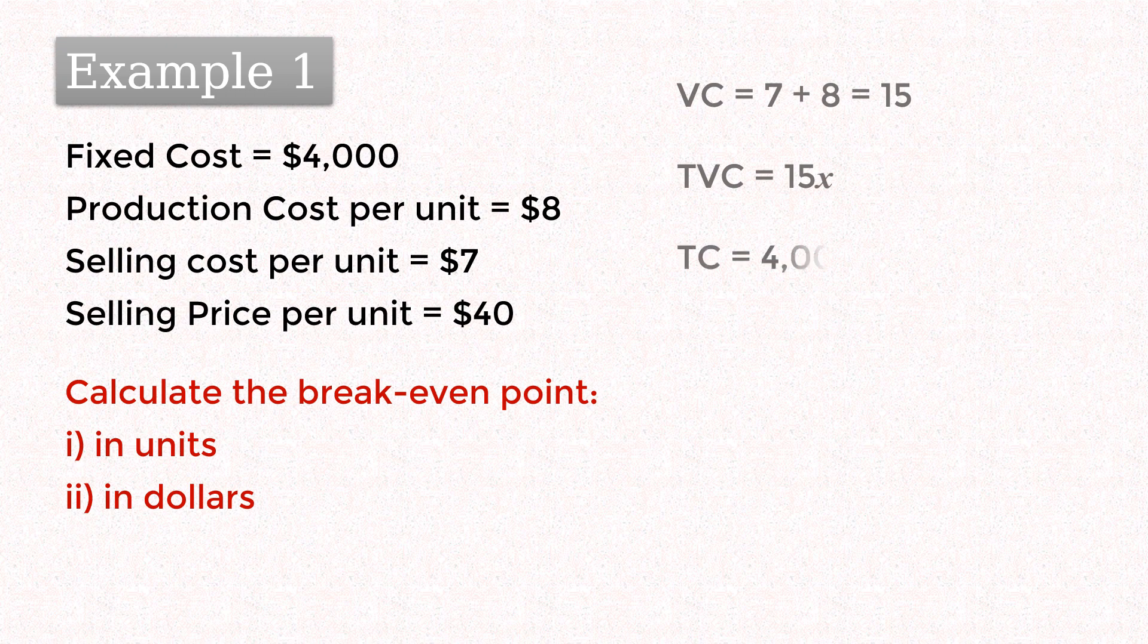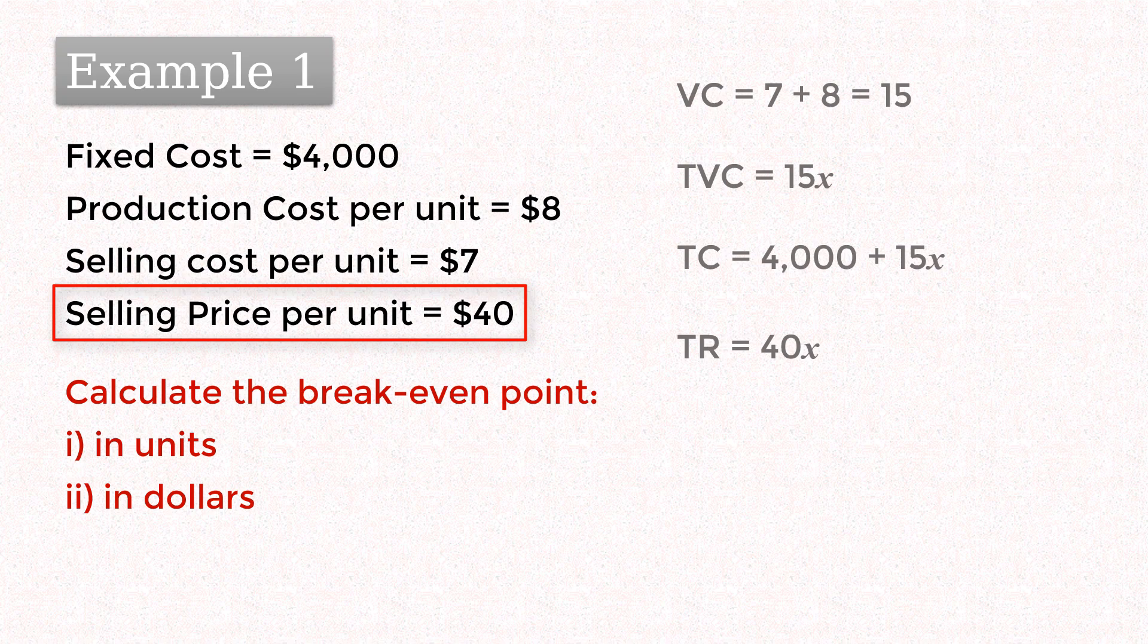The total cost function is therefore 4000, the fixed cost plus 15x, the total variable cost. From the selling price per unit of $40, we have the total revenue function of 40x.